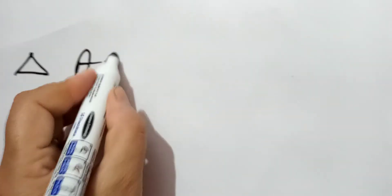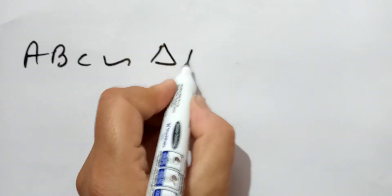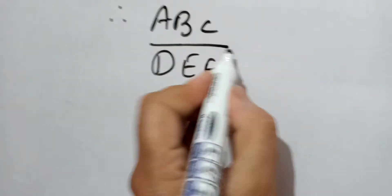We are given triangle ABC is similar to triangle DEF. Therefore, the area of triangle ABC to the area of triangle DEF is equal to the ratio of the square of their corresponding sides.